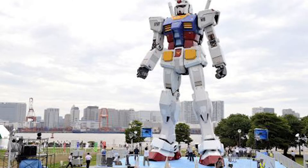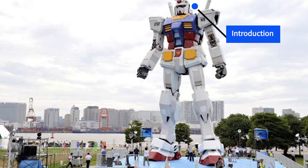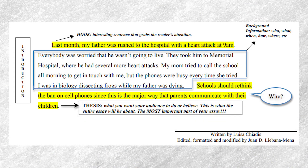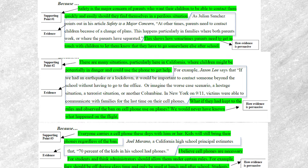If the intro is the head and the brain, then the body of your argumentative essay is the body of our hypothetical giant robot. This makes up the bulk of what we'll be writing. Your intro will be short — like a paragraph or maybe a couple of them. Your body will be much longer, because it houses the details you need to get across to convince the reader that you are correct.